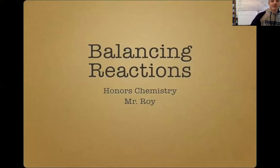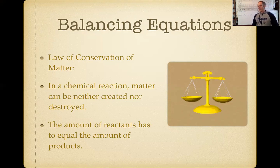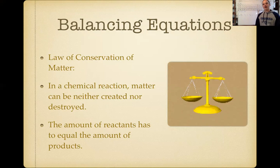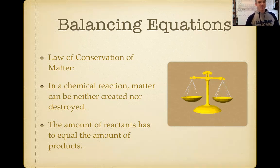With balancing reactions, we're interested in how a reaction can have the same amount of reactants and products, because in a reaction you want to make sure atoms don't disappear or magically show up from nowhere. In a chemical reaction you have reactants on one side and products on the other, and we want to maintain the same amount before and after. That balance is called conservation of matter.